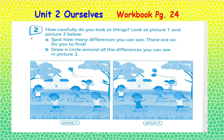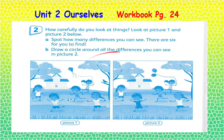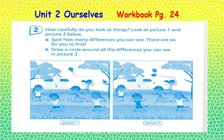On number two, look carefully at the pictures. This is picture one and this is picture number two. Now spot how many differences you can see — there are six for you to find. Once you find them, draw a circle around all the differences you can see in picture two.